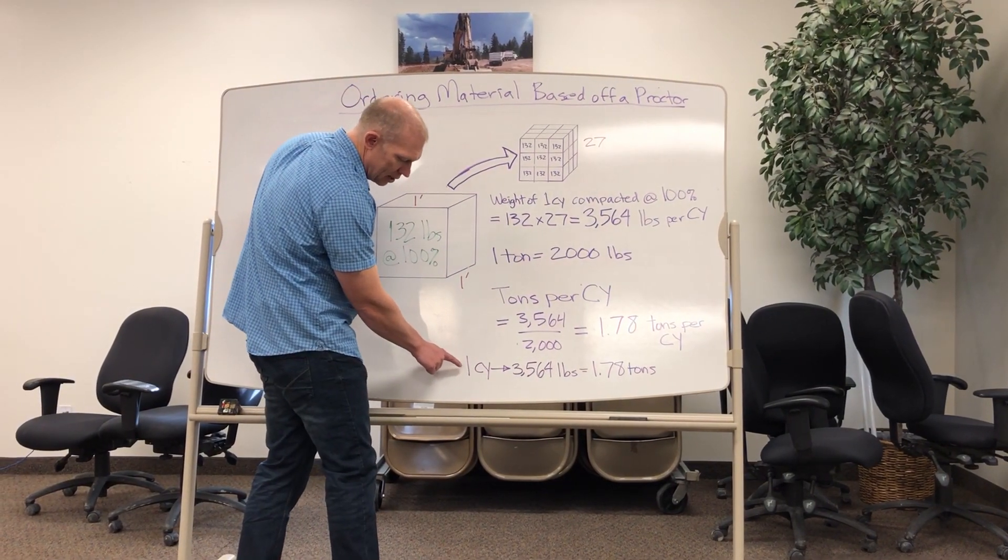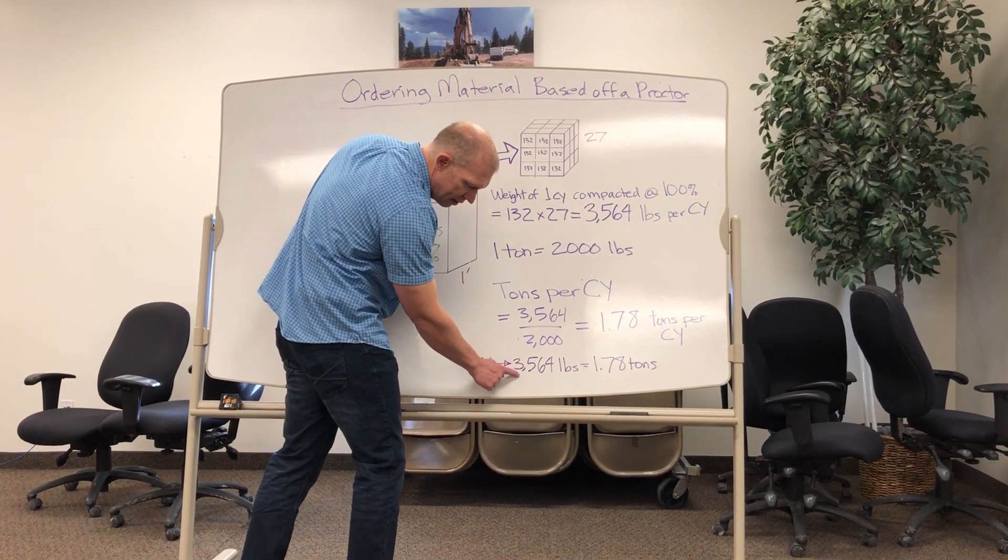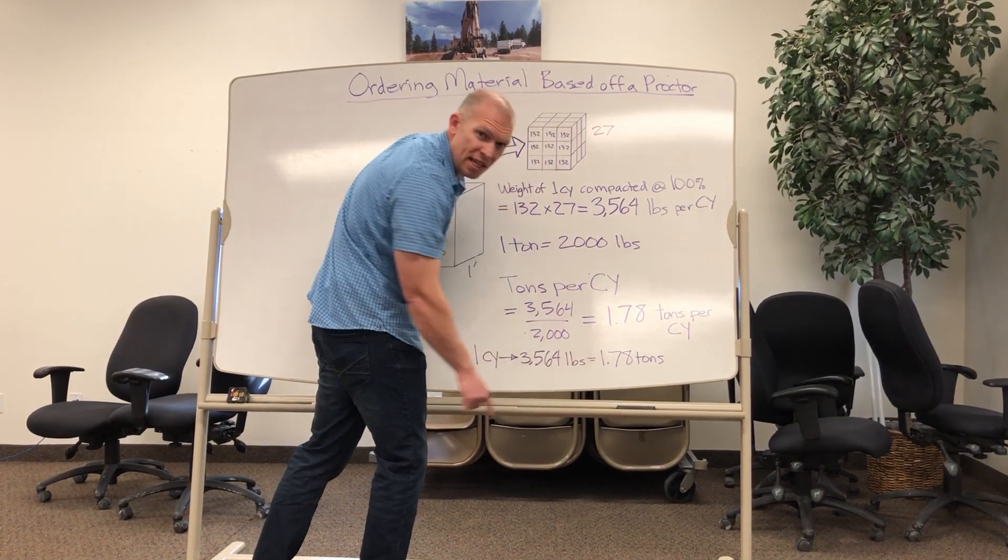Another way of looking at it is this one cubic yard weighs 3,564 pounds or is 1.78 tons.